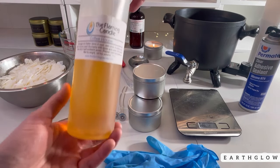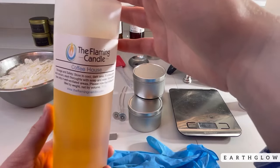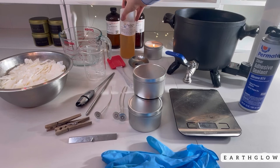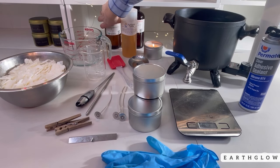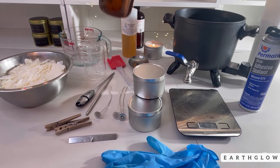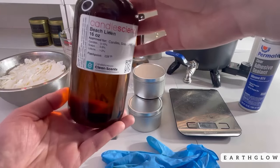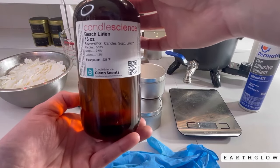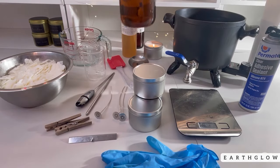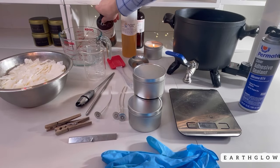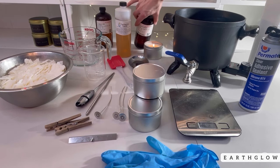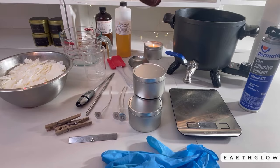The first one is from the Flaming Candle and this is called Coffee House. It's a wonderful fragrance but to me it smells more like a caramel latte. The next fragrance that I'm recommending for this tutorial is called Beach Linen by Candle Science and this is a beautiful fresh summertime scent that just really fills your home beautifully if you're looking for something more on the clean side.